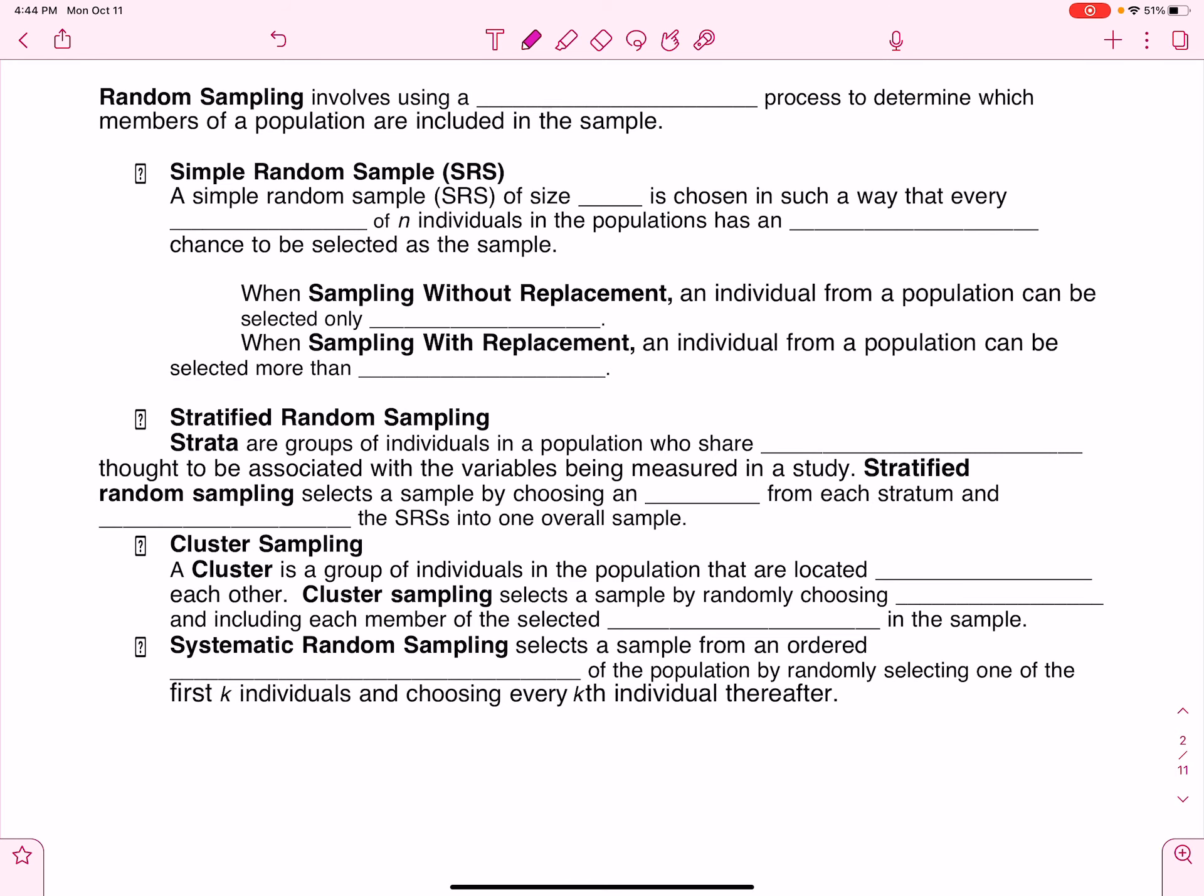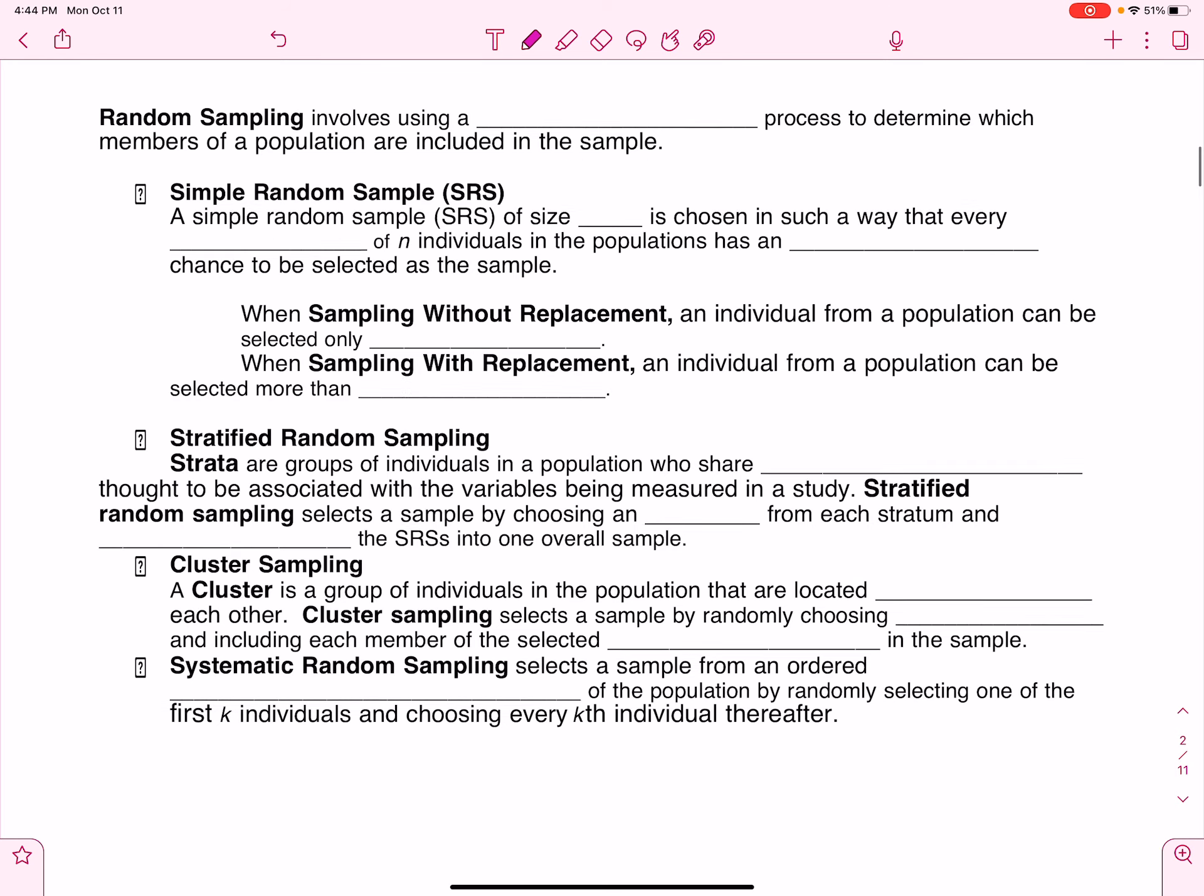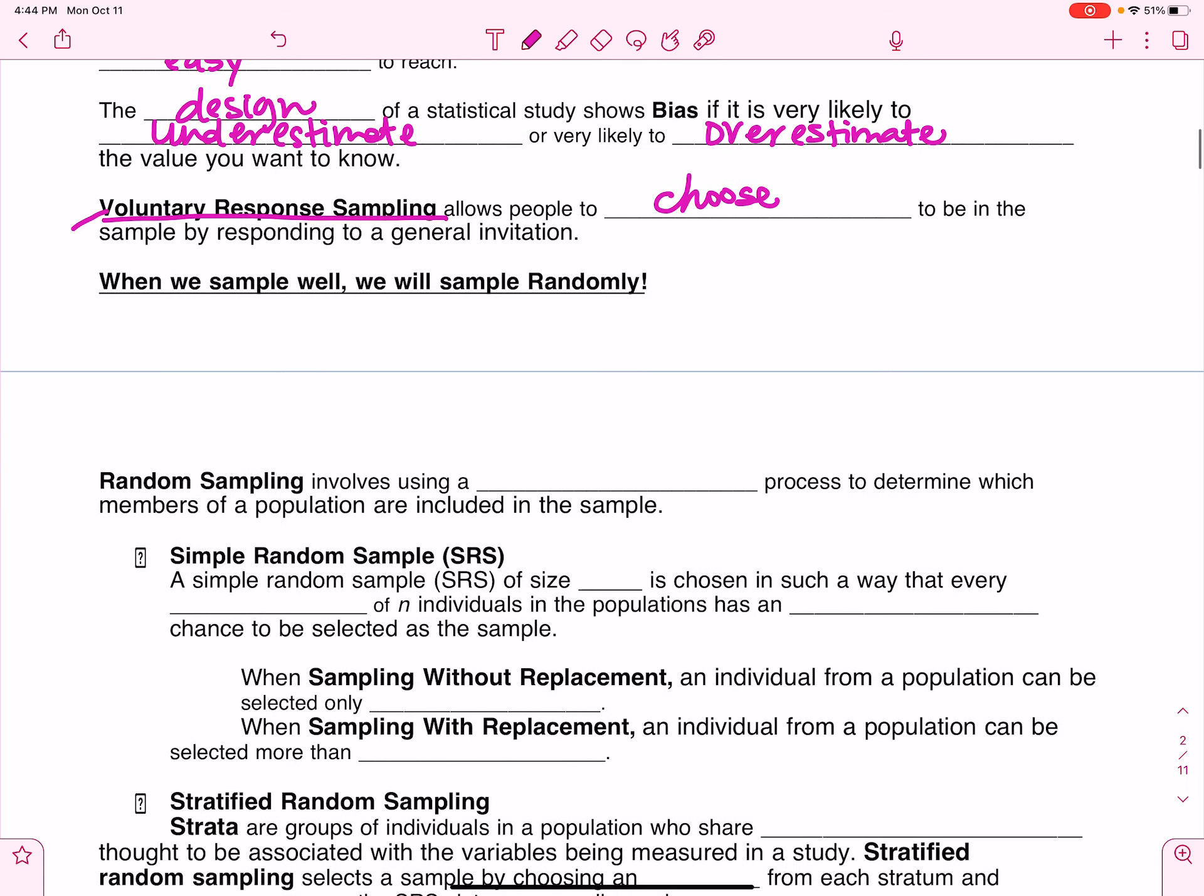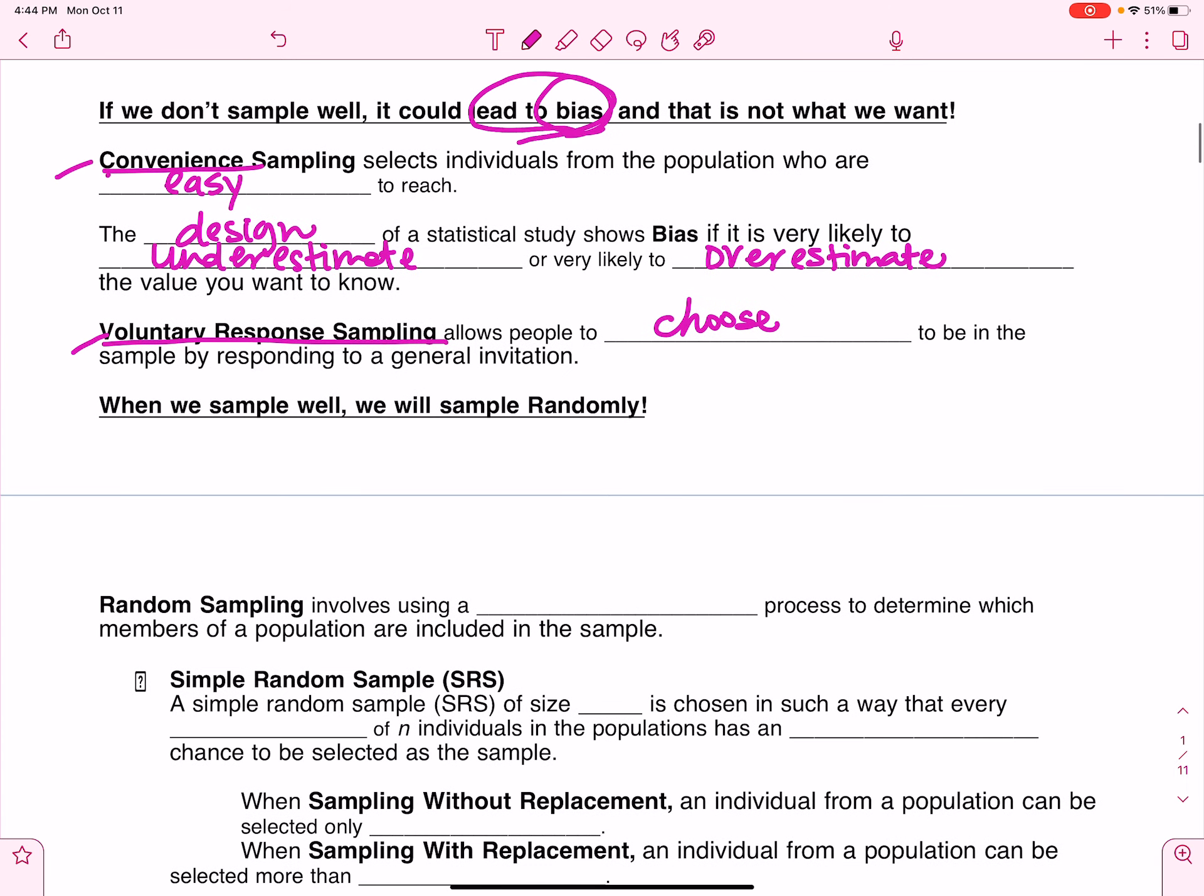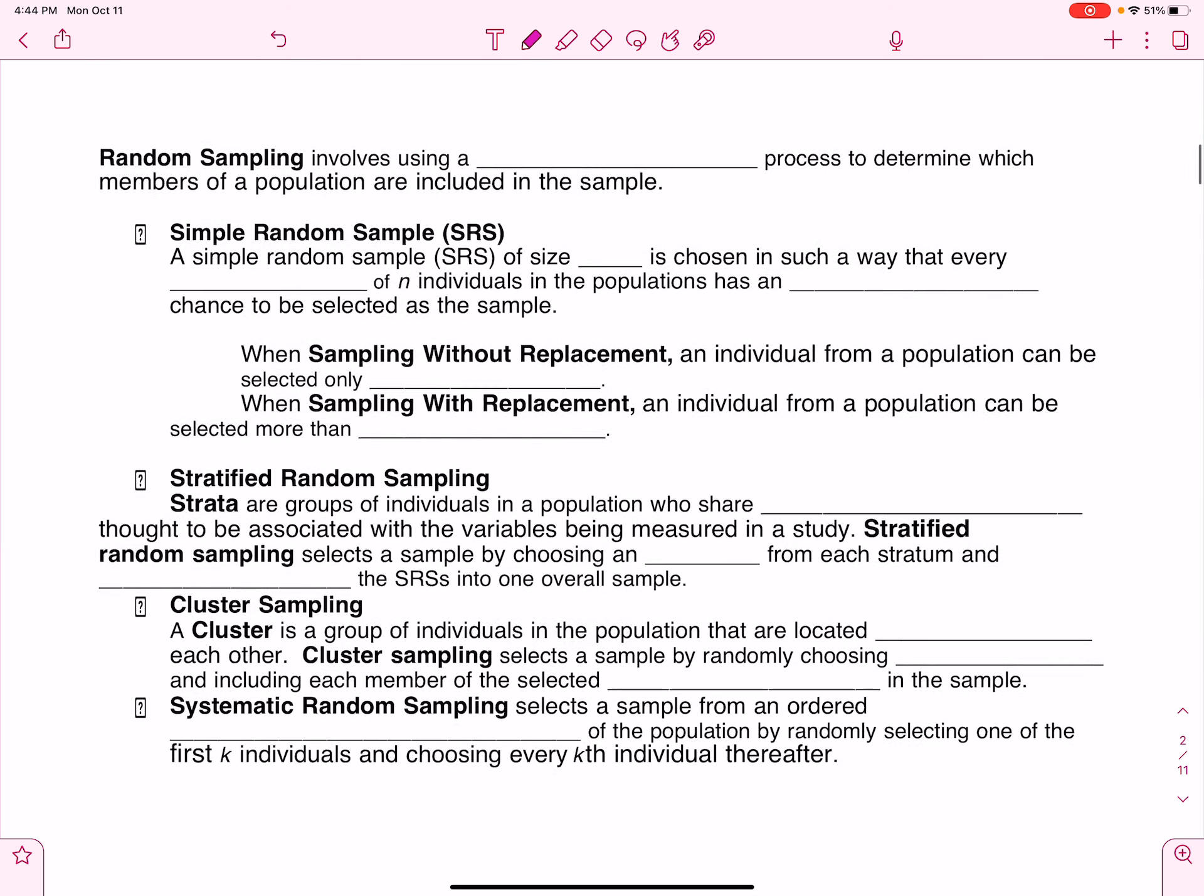AP Statistics. In this video we are continuing Unit 3 talking about sampling. I've already talked to you in the last video about a couple of sampling methods that are not good because they lead to bias. So now we're going to talk about good sampling methods.